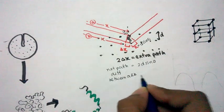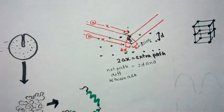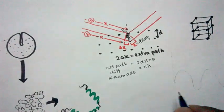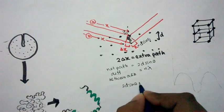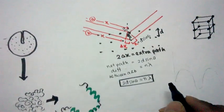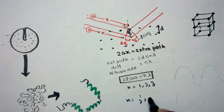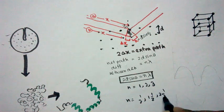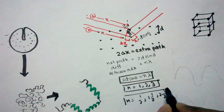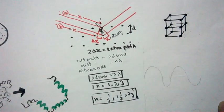This path difference between the A and B X-rays is 2d sine theta. According to Bragg's law, this distance equals n lambda: 2d sine theta = n lambda, where n can be an integer such as 1, 2, or 3 (constructive interference), or a fraction like 1/2 or 3/2 (destructive interference).